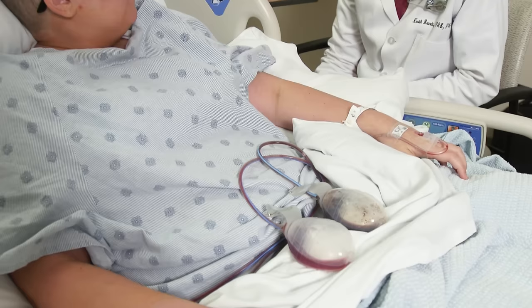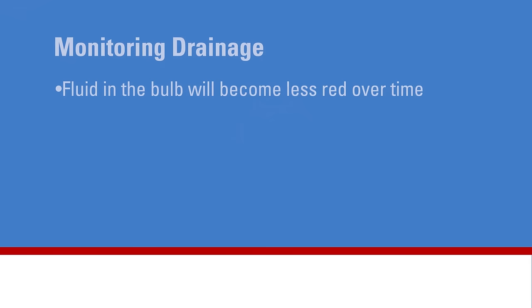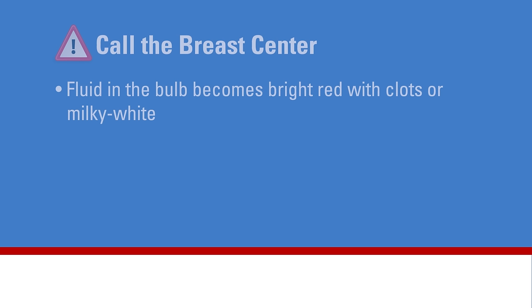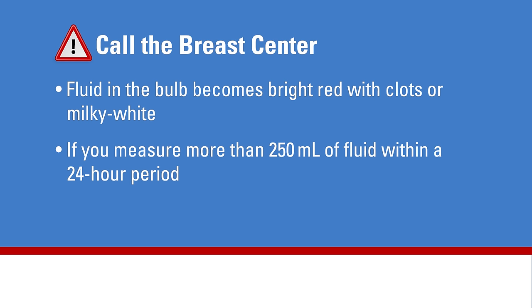The fluid in the bulb right after surgery is red, which is normal because it contains some blood cells. It becomes less red over time, usually becoming a clear yellow or cloudy fluid with occasional small red blood clots or pink fibrous tissue — a normal part of healing. Call the breast center right away if the fluid becomes bright red with clots or milky white in color, or if you measure more than 250 milliliters of fluid within a 24-hour period.